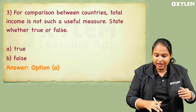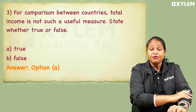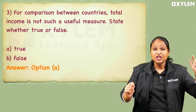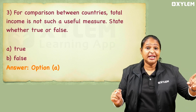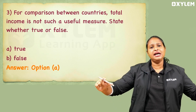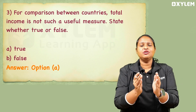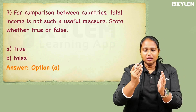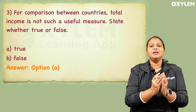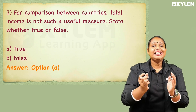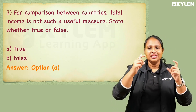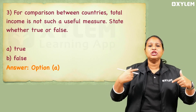The next question is for comparison between countries. We have a minimum comparison between countries. So here we have a true or false statement — an objective question. In the first A section, in the objective question, we have a true or false statement. That means we have a statement.